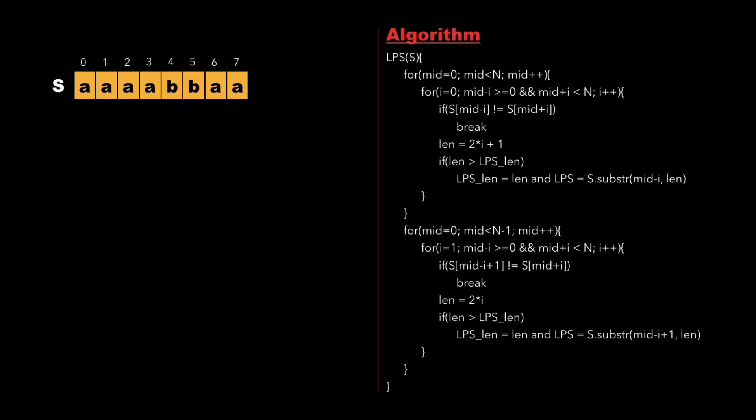The right side of the screen shows the algorithm. We have a function called 'longestPalindromicSubstring' whose argument is the string s. There are two for loops — one for calculating the length of odd-length palindromes and another for even-length palindromes. We declare variables: 'lps_length' initialized to 0, a string 'lps' initialized to empty, and 'n' representing the string length, which is 8. We begin by traversing from mid=0 to mid less than n.